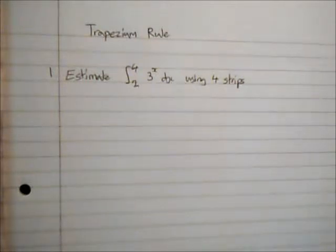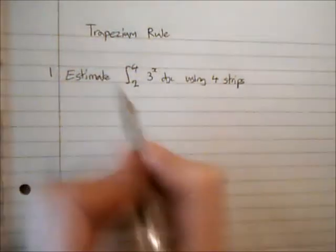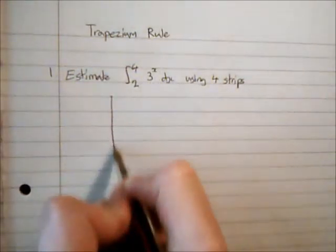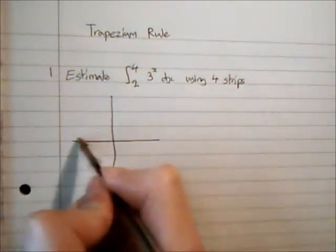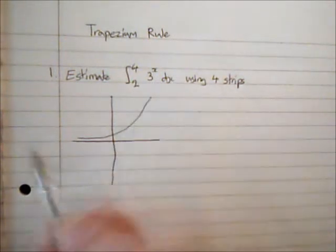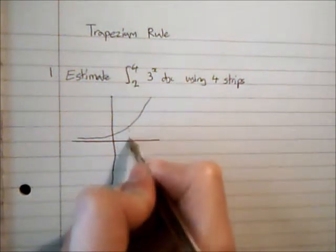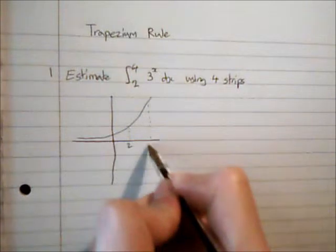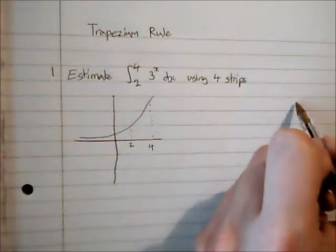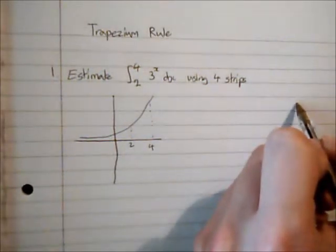So how does this idea work? Let's just do a rough sketch. 3 to the x is going to look something along this line. If we have between 2 and 4, we are trying to find the area under the curve between these values.